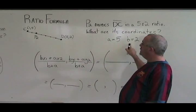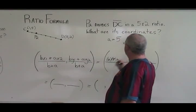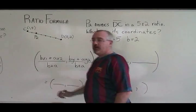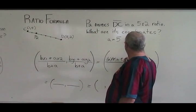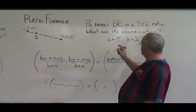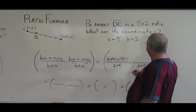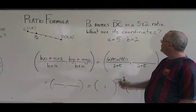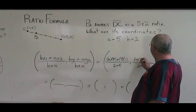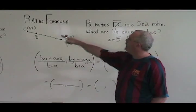Bx1 means two times eight. Ax2 means five times one. B plus A means two plus five for both coordinates. BY1 means two times five, AY2 means five times four.